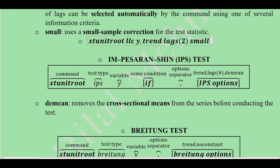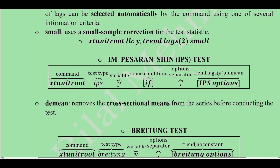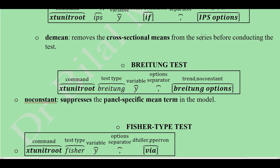The IPS test has a similar command syntax. We write IPS, then the variable name, then the condition if needed, then a comma followed by IPS options. The trend and lags options work the same as in the LLC test. The demean option is slightly new — it removes cross-sectional means, which in turn reduces the problem of cross-sectional dependence.